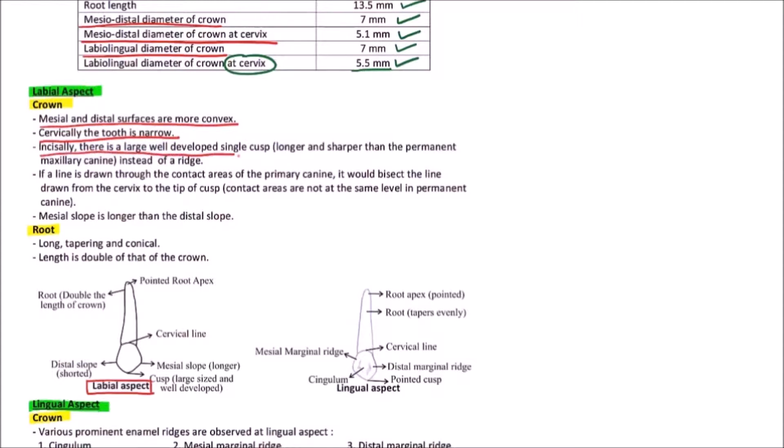Incisally, there is a large, well-developed single cusp which is longer and sharper than the permanent maxillary canine. We can observe that this is the cusp, and it is large-sized and well-developed.